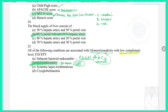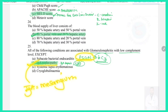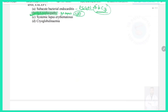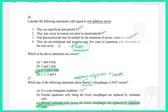Question 25: All of the following conditions are associated with glomerulonephritis with low complement levels except — in sub-acute bacterial endocarditis causing post-infectious GN, C3 deposition occurs and C3 levels decrease. In SLE and cryoglobulinemia, C3 deposits are present so C3 decreases. In IgA nephropathy, IgA is deposited in the mesangium with no effect on C3, so C3 levels are normal. Answer: IgA nephropathy.